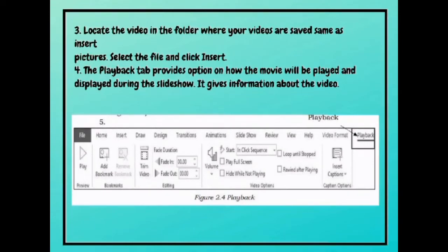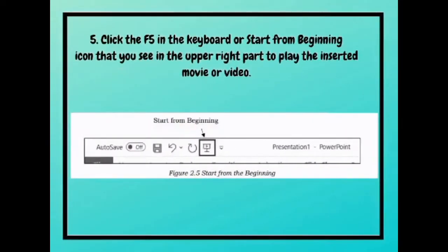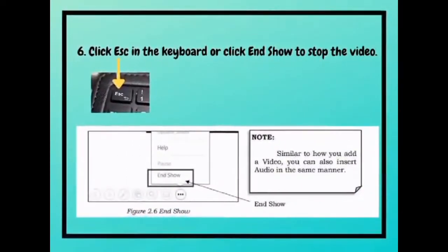The Playback tab provides options on how the movie will be played and displayed during the slide show. It gives information about the video. Click F5 on the keyboard or the Start from Beginning icon in the upper right part to play the inserted movie or video. The last step is to click the Escape key on the keyboard or click End Show to stop the video. Note: similar to how you add a video, you can also insert audio in the same manner.